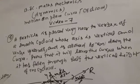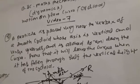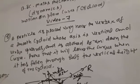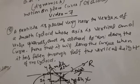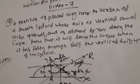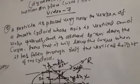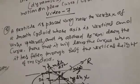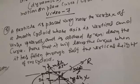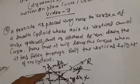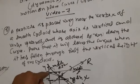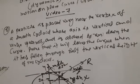In mechanics dynamics and topics of motion on plane curves, this is quiet video number seven. The question is: a particle is placed very near to the vertex of a small cycloid whose vertex is vertical, and the particle starts from near the vertex.